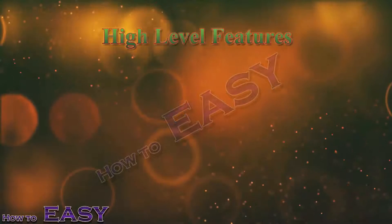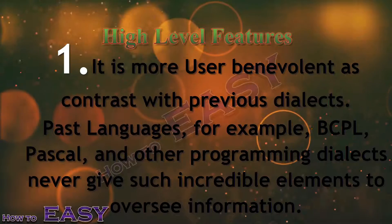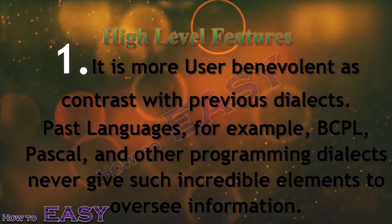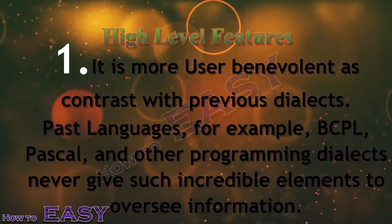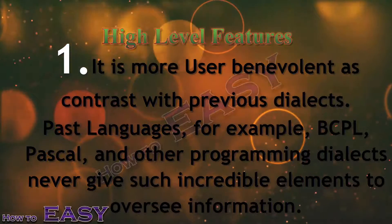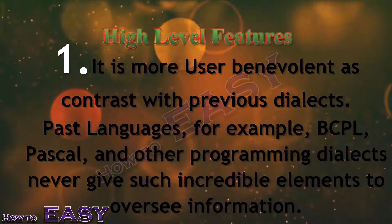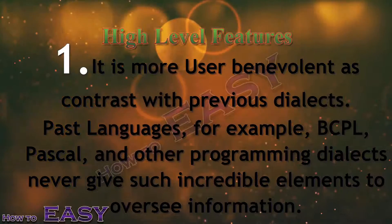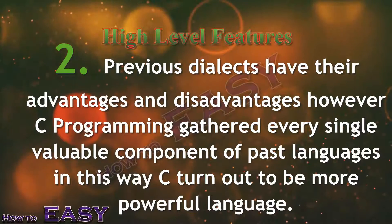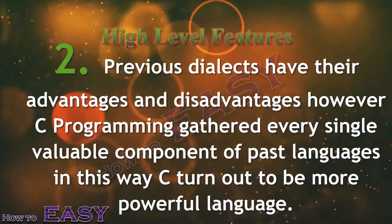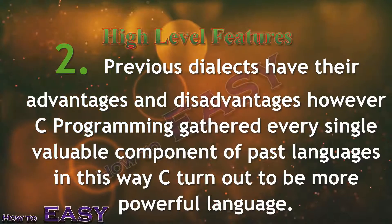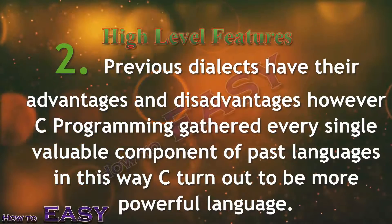Fifth, high level features. C is more user friendly as compared to previous languages. For example, BCPL, Pascal, and other programming languages never provided such great elements to manage information. Previous languages have their advantages and disadvantages, however C programming gathered every single valuable component of past languages, and in this way C turned out to be a more powerful language.